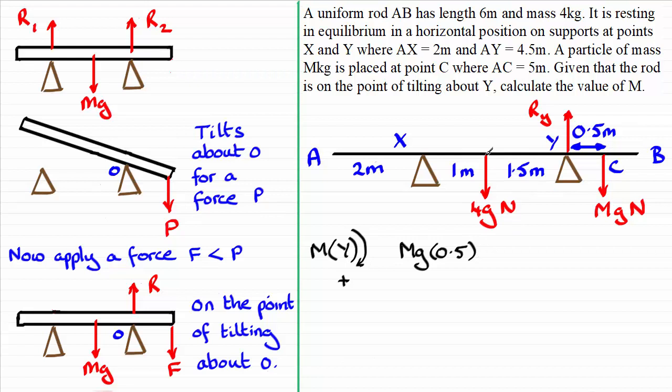And then I've got the weight of the rod acting downwards here on the other side of Y. So it's going to want to turn the rod in an anti-clockwise sense, a negative sense. So that's going to be the force, 4G.